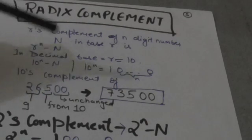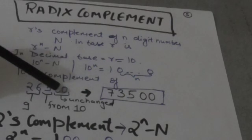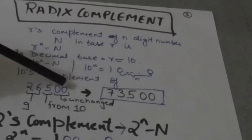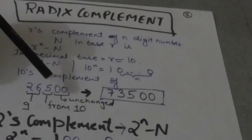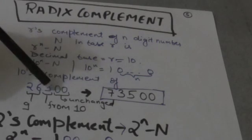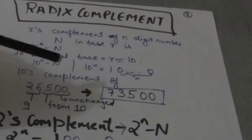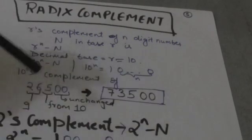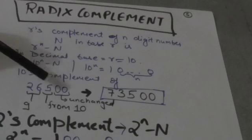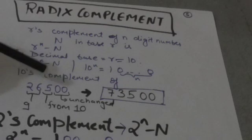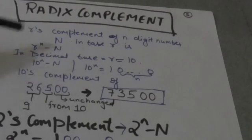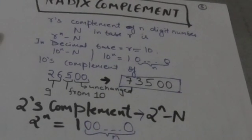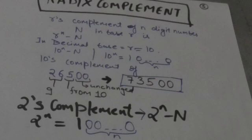Suppose we have to find the 10's complement of a number. We leave the least significant zero digits unchanged — those remain 0 0. The first least significant nonzero digit, which is 5, is subtracted from 10, giving 5. The higher significant digits are subtracted from 9: 9 minus 6 equals 3, and 9 minus 2 equals 7. So the 10's complement result is 7 3 5 0 0.